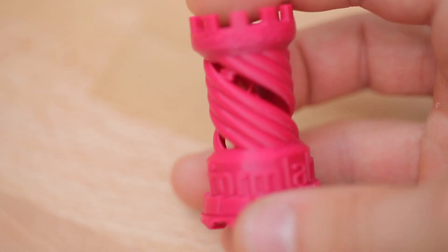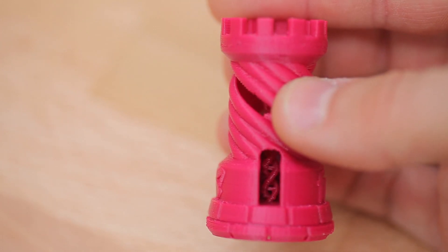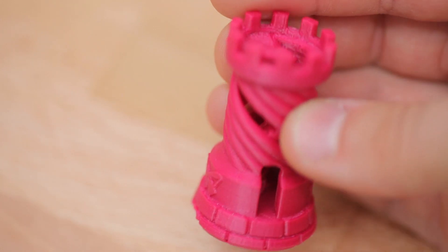Again, 0.2mm layers. The center helix is there, and it doesn't look that bad, and overall I do like the print quality on this part.